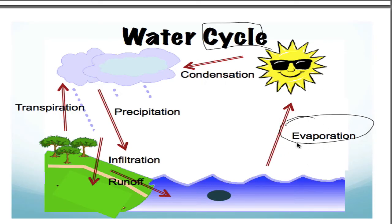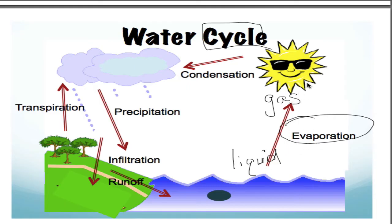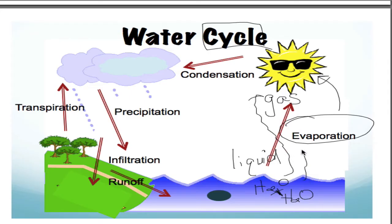I like to start with evaporation. As you can see, the arrow goes from water up into the atmosphere — so we're starting with liquid water and turning it into gas. That's all evaporation is. The big player in evaporation is the sun. What's happening is we have all these tiny little water particles down here — maybe in the ocean, maybe in the lake — and they're bonded together. The sun is going to break this bond and allow these molecules to go into the atmosphere because now they've got a lot of energy.